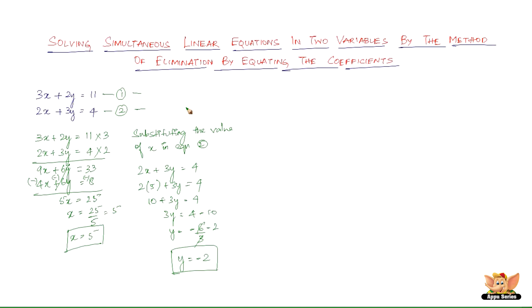That's all — nothing complex in this method. All you have to do is eliminate either x or y by equating their coefficients, then add or subtract to cancel the variable. If the signs are already opposite, just add; if not, subtract to change the signs. Find one variable's value and then substitute it in one of the given equations to find the other variable.